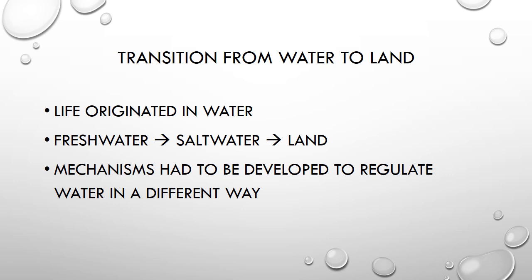For example, terrestrial animals had to evolve a mechanism for inducing thirst. Even among terrestrial animals, there are many differences in how water is regulated, depending on the type of animal and the climate in which they live.